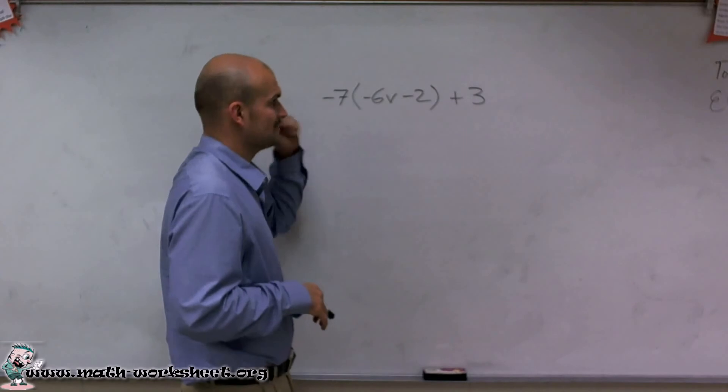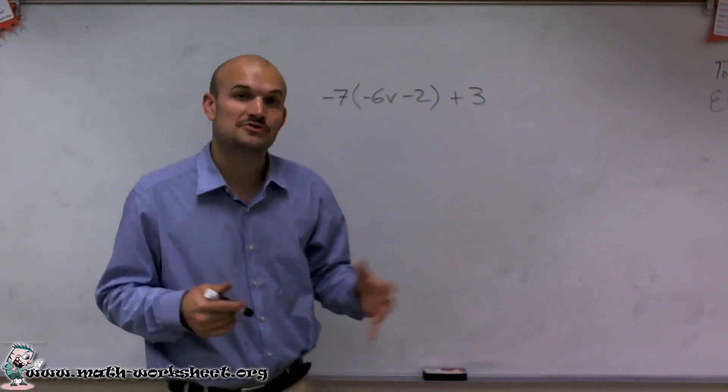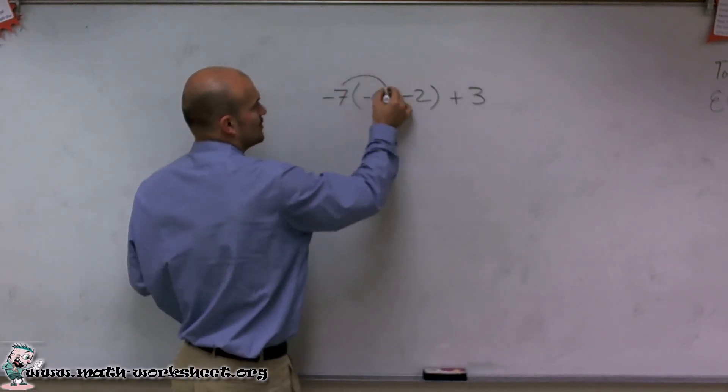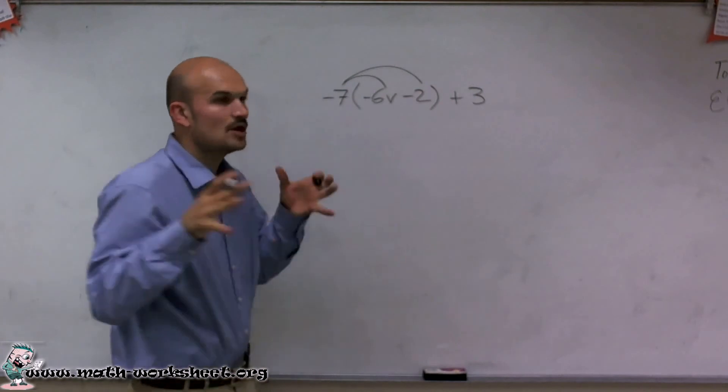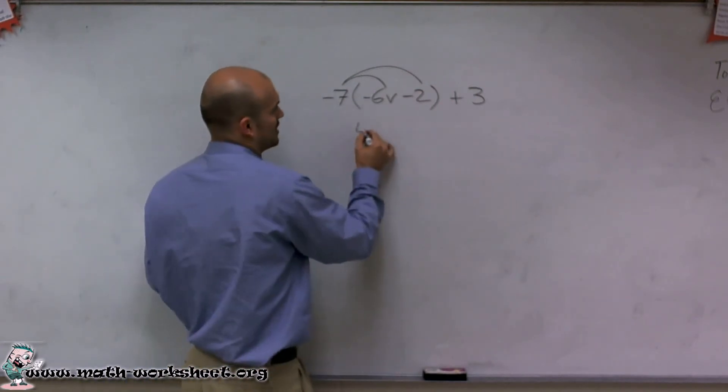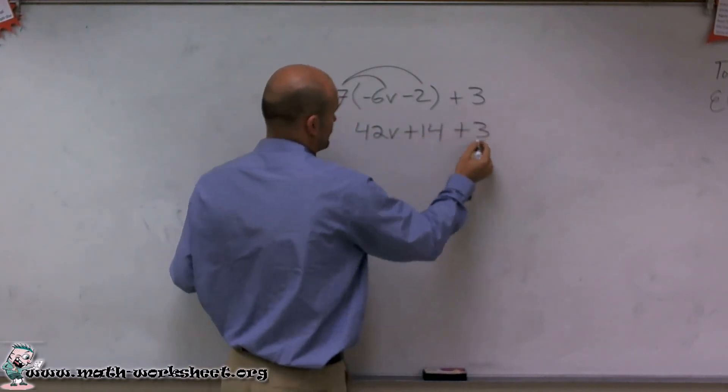So therefore, what I'm going to do next with the parentheses is apply the distributive property. The distributive property states that any number being multiplied by a parentheses, you have to multiply that term times both of the numbers inside the parentheses. So therefore, I obtain a positive 42v plus 14 plus 3.